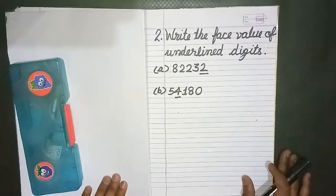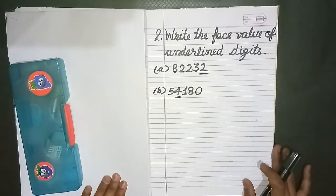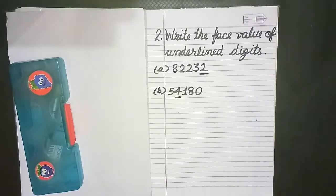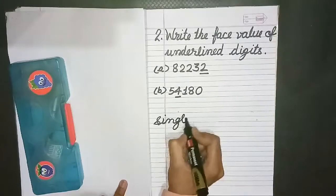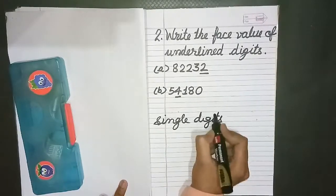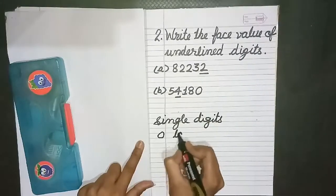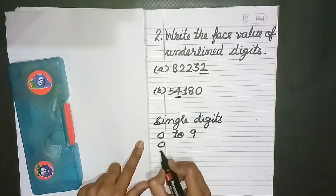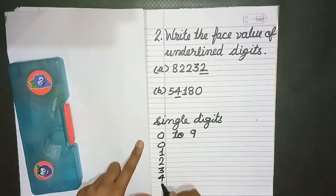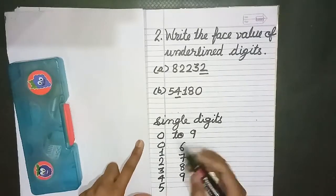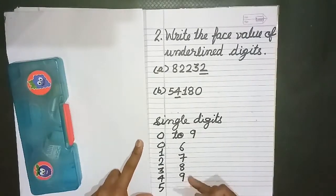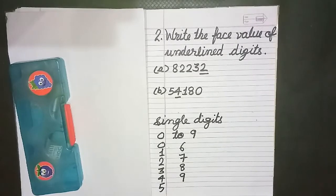So let me tell you that face value always are single digit, means one digit number, means 0 to 9. So 0, 1, 2, 3, 4, 5, 6, 7, 8, and 9. So these are the single digits numbers. So face value of any number is only from these digits.